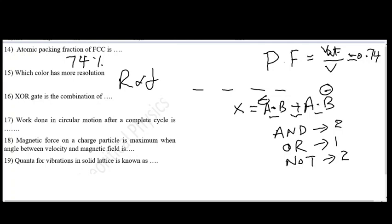And question number 17, work done in circular motion after a complete cycle is? It is a very important question in physics, often asked in interviews. There are various reasons from which we can deduce that work done in circular motion after a complete cycle is zero.